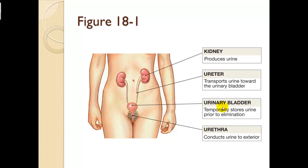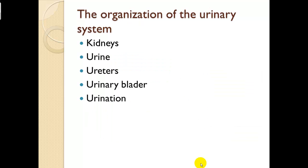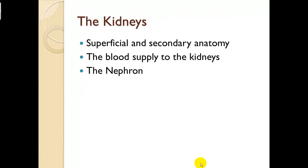Figure 18-1 in your book shows the kidneys located in the retroperitoneal area. We're going to talk about the ureters, which allow for collection of urine in the bladder. The urinary bladder temporarily stores the urine, and then the urethra conducts urine to the exterior. We'll cover kidneys, urine, ureters, urinary bladder, and urination in this section.